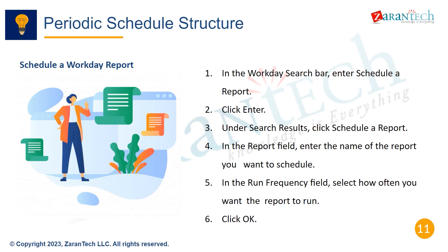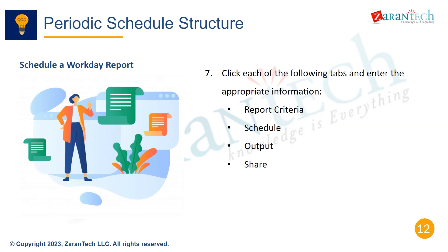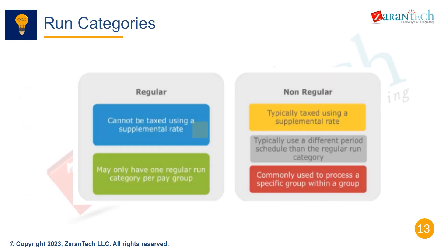To schedule a Workday report: first, enter 'Schedule a Report' in the search bar; second, select the report frequency and other details; third, click OK to schedule. When scheduling a report, enter details in the Report Criteria, Schedule Output, and Share tabs.